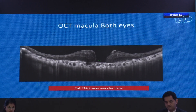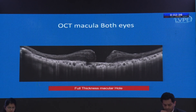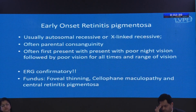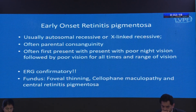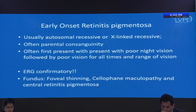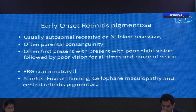Remarkably, in both eyes this patient also had a macular hole — complete loss of retinal layers at the macula — possibly responsible for the poor vision. Early onset retinitis pigmentosa usually has autosomal recessive or X-linked recessive inheritance, and parental consanguinity may be present. ERG is confirmatory. Most patients first present with poor night vision followed by poor vision for all times and ranges. If there is central vision loss or very poor visual acuity, look for foveal thinning, cellophane maculopathy, and central retinitis pigmentosa.